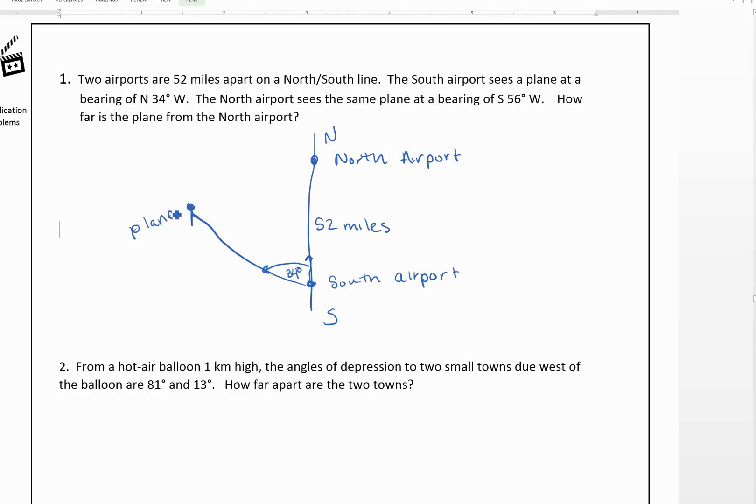The north airport sees the same plane at a bearing of south 56 degrees west. So we're told this is 56 degrees. How far is the plane from the north airport? So we're looking for that value there.